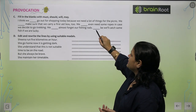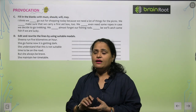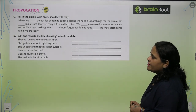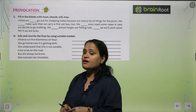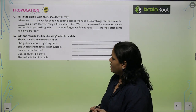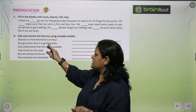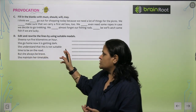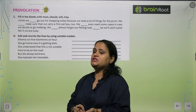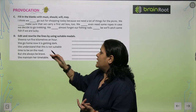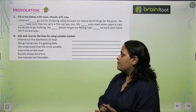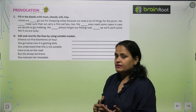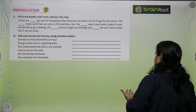Edit and rewrite the lines by using suitable modals: 'Sheena run 5 kilometers an hour' — 'Sheena can run 5 kilometers an hour.' 'She go home now, it is getting dark' — 'She should go home now, it is getting dark.' 'She understand that this is not suitable time to be on the road' — 'She should understand that this is not a suitable time to be on the road.' 'But she always be brave' — 'She will always be brave.'